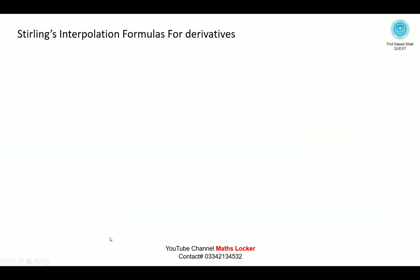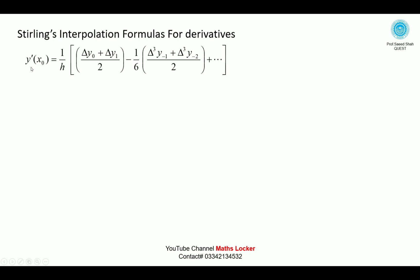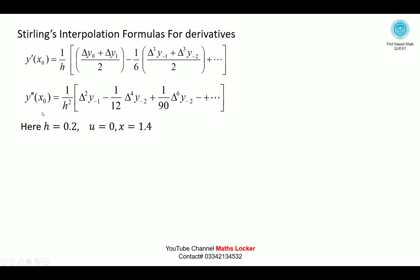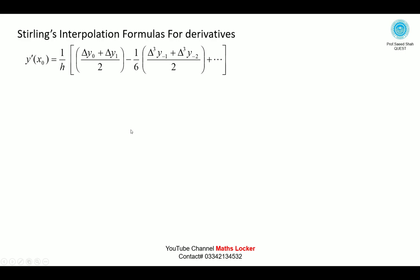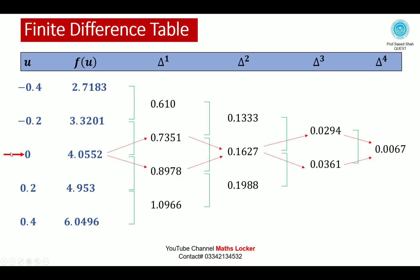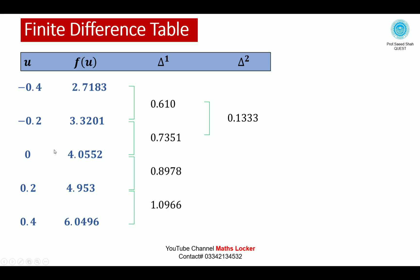Applying the Stirling interpolation formulas for derivatives. Using the first derivative formula and the second derivative formula, where h=0.2 and u=0 (i.e., x=1.4).